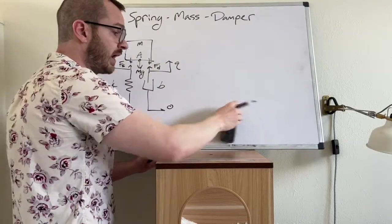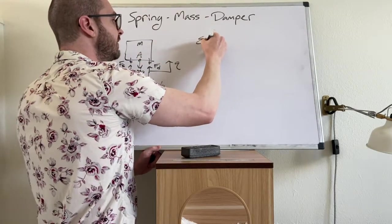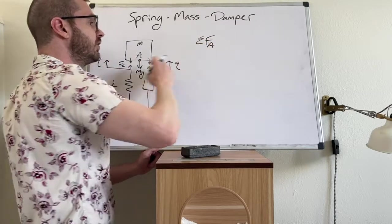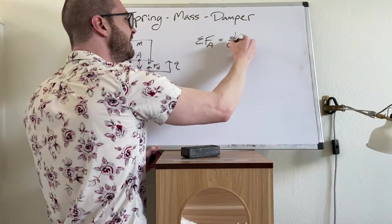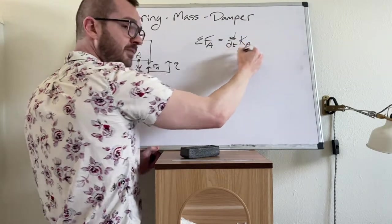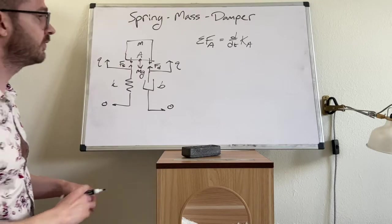So we can now write Newton's second law for the block. We know that Newton's second law is sum of forces on A. This is DDT of the linear momentum of A. And the mass of A is constant. We're not doing, there's no fuel being ejected.